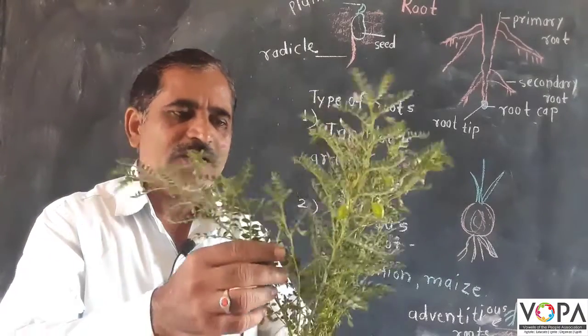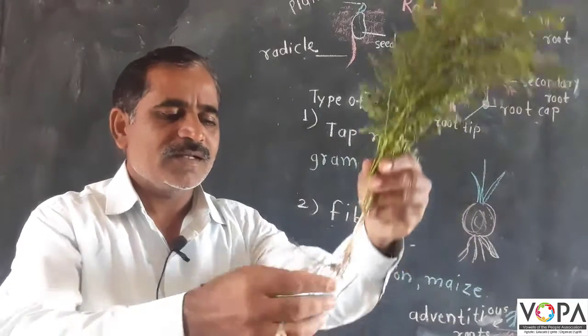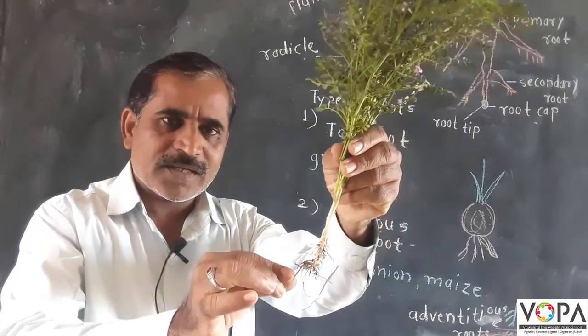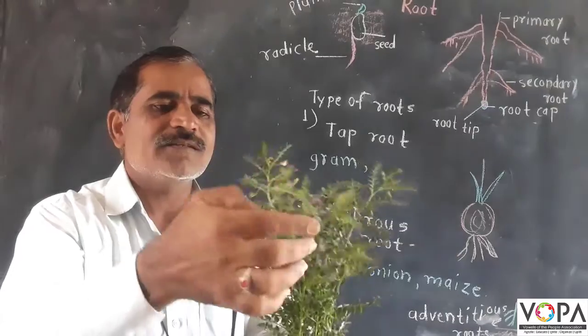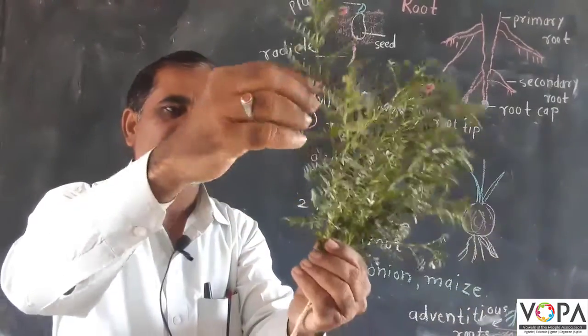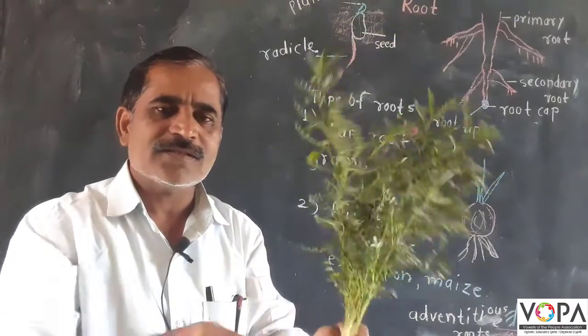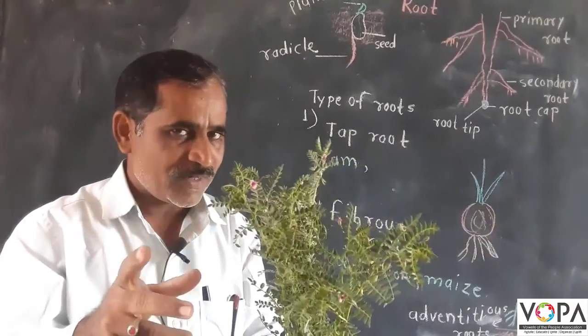Students, what is this? This is the plant. Look here, this is the root of the plant and this is the flower of the plant. This is fruit of the plant and this is stem. Thus, these are the parts of the plant.